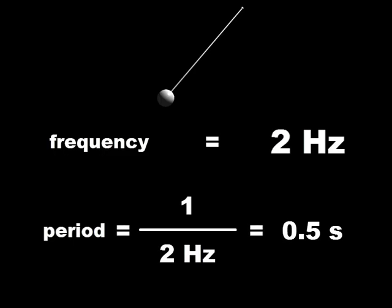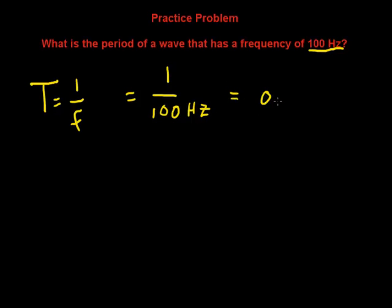Let's practice using this relationship. What's the period of a wave that has a frequency of 100 hertz? Okay, now period is equal to one over the frequency, right, the reciprocals. So that means that we're going to take one over the frequency, which is 100 hertz, and let's put it in the calculator, and we come up with 0.01 seconds.